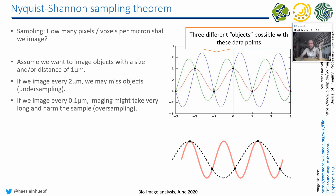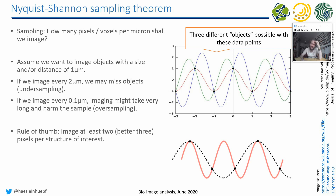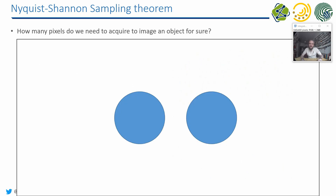There is no general solution, but there is a rule of thumb related to the size of the objects we are looking at. You also have to think about what the object actually is. If we want to see cells and just want to know how many cells there are without looking inside them, we should acquire images with approximately a third — at least a half, but better a third — of the size of the cell. We should have at least three pixels to be sure a cell is there.